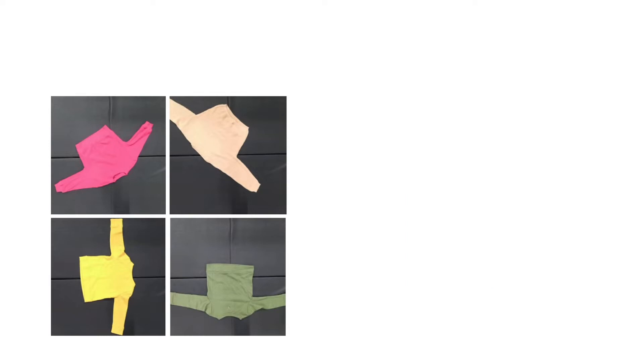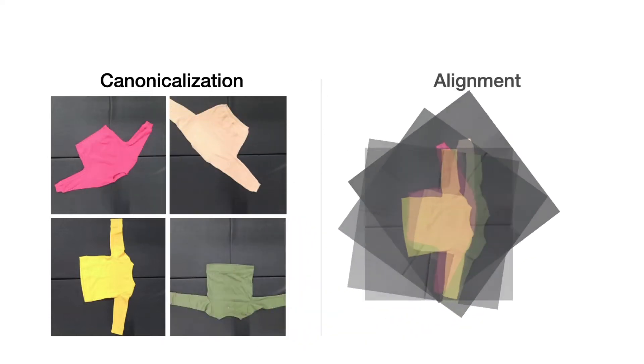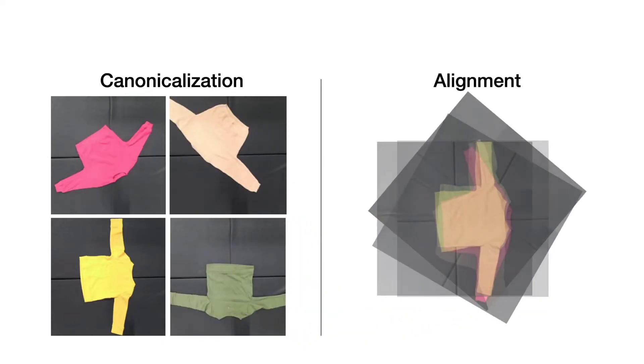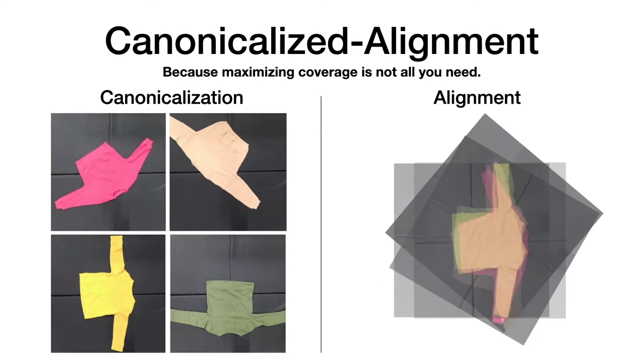Specifically, we can bring garments to a structured pose, termed canonicalization, and we can do so at a desired position and orientation, which we call alignment. Combined together, we call this task canonicalized alignment, and we hypothesize that this task significantly reduces the complexity of downstream tasks.